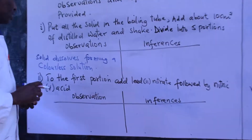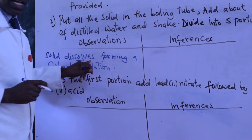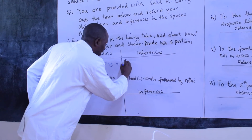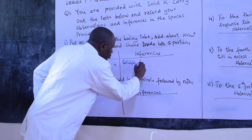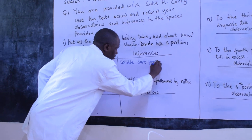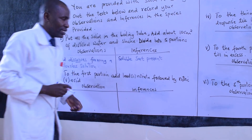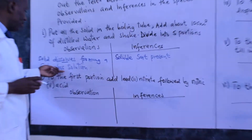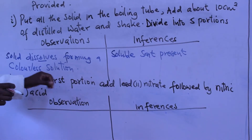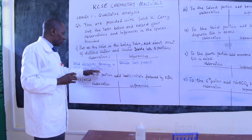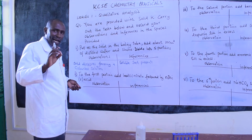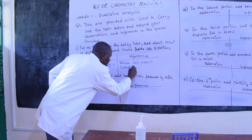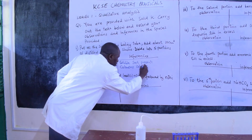Now let's look at the inferences. When a solid dissolves, what deductions can you make? It tells us that the solid is soluble. Therefore our inference is: soluble salt present. Now think about the colorless solution. What does this imply? This implies that the colored ions are absent. So our inference includes: colorless solution — colored ions absent.